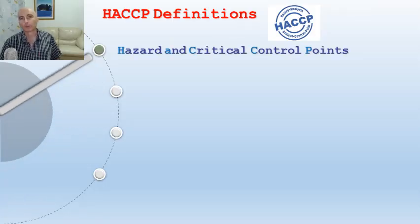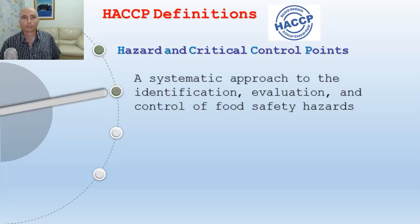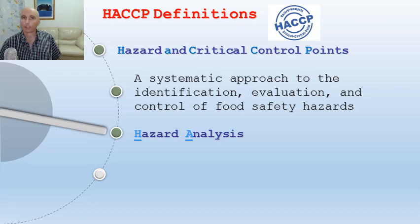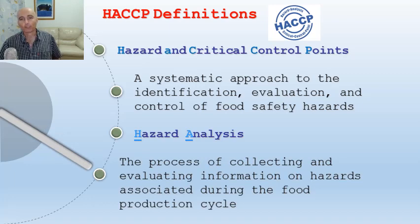So what is HACCP? You'll know it very well by the end of the hospitality course. HACCP stands for Hazard Analysis and Critical Control Points. It's a systematic approach to the identification, evaluation, and control of food safety hazards throughout the full food cycle. Hazard analysis is the process of collecting and evaluating information on hazards associated during the food production cycle.